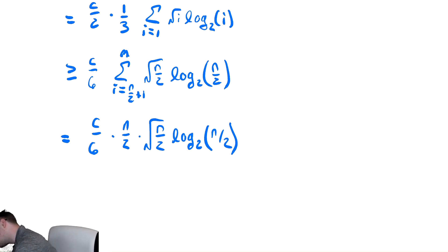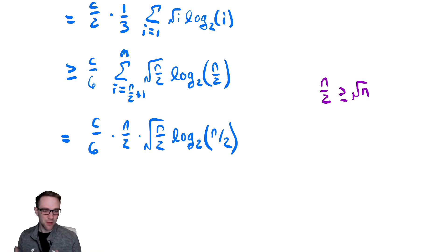Just as we saw when we were bounding before, we're going to do n over two is greater than or equal to radical n. And radical n, I'm going to write n to the one half to make my life a little bit easier.